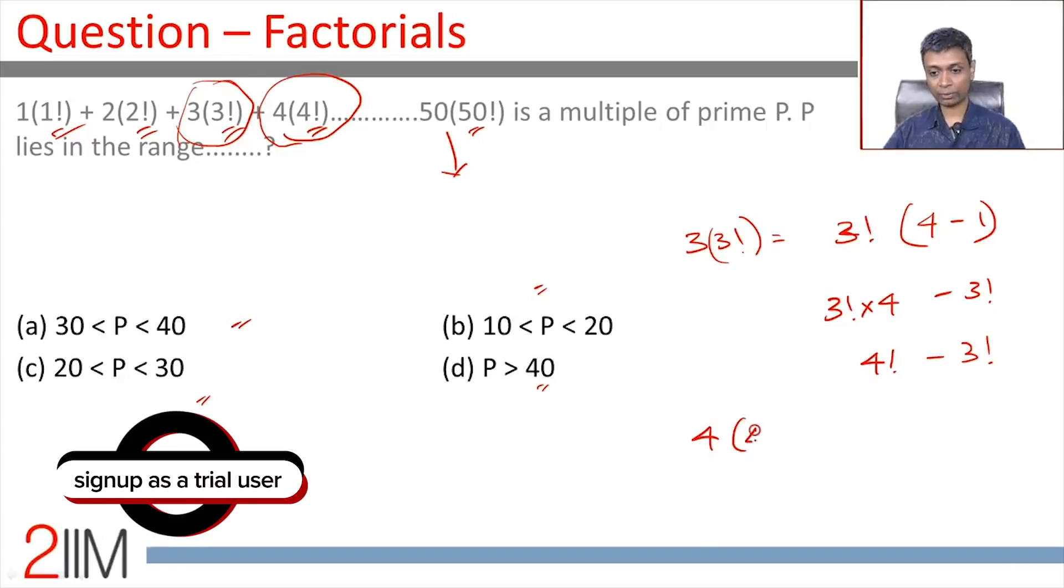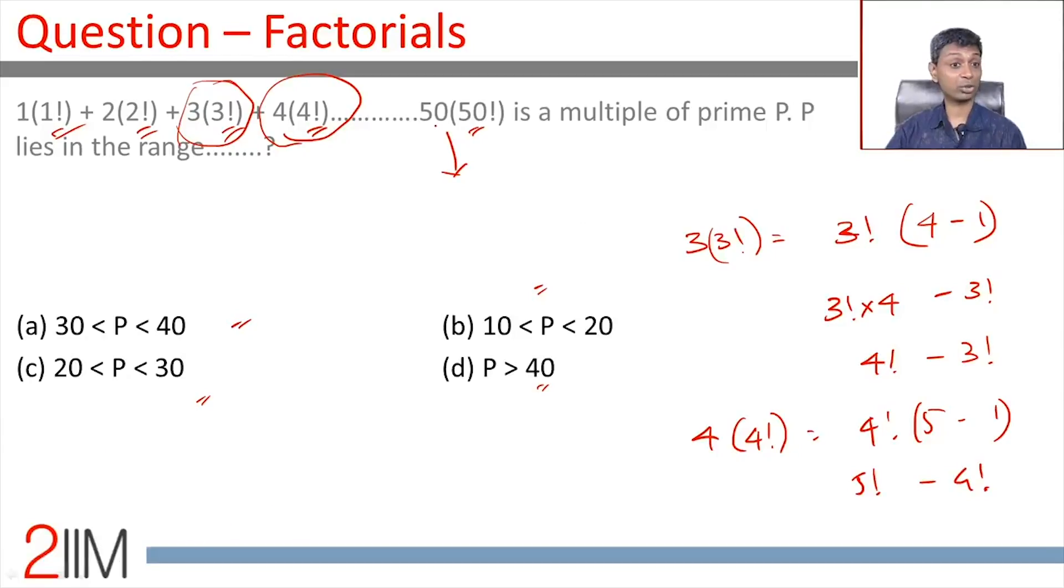4 into 4 factorial is nothing but 4 factorial into 5 minus 1. Now, this is 5 factorial minus 4 factorial. Once we write it like this, then we get a wonderful expression for this. So, what exactly is this?